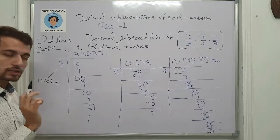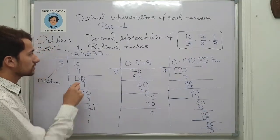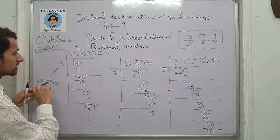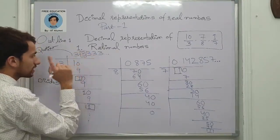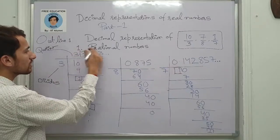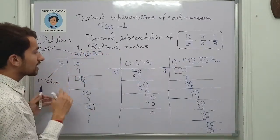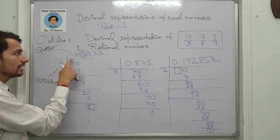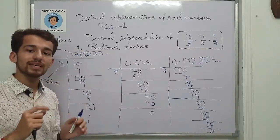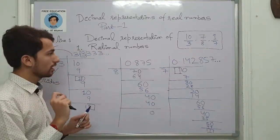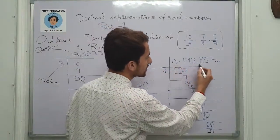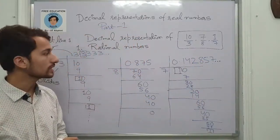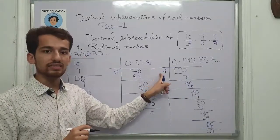The second observation is about the number of digits which are repeating in the quotient. For 10 by 3, only one digit — the 3 — is repeating, which is less than the divisor 3. For 1 by 7, count the repeating digits: 1, 2, 3, 4, 5, 6 — there are 6 digits repeating in the quotient, which is less than the divisor 7. So the number of repeating entries is always less than the divisor.